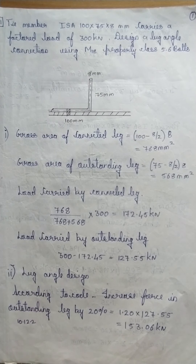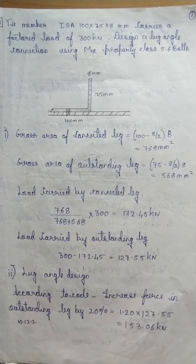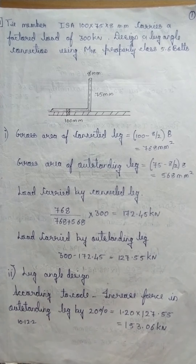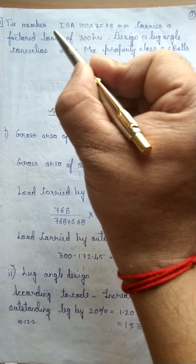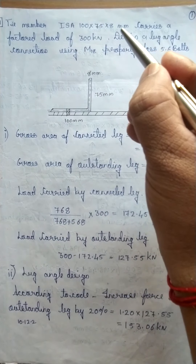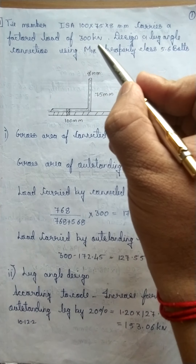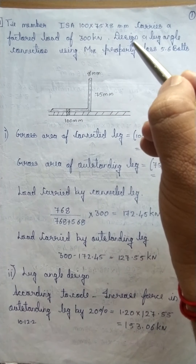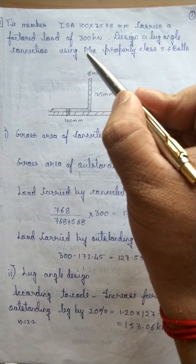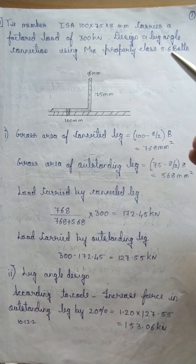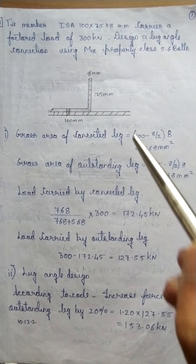Welcome students. In today's lecture on design of tension members, in the previous lecture we discussed about lug angles and their design considerations. Today we shall solve a numerical on the design of lug angle. The question: a tension member ISA 100 by 75 by 8 carries a factored load of 300 kilo Newton. Design a lug angle connection using M18 property class 5.6 bolts.